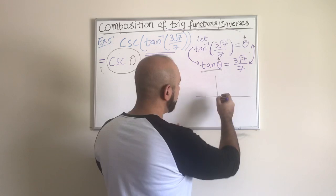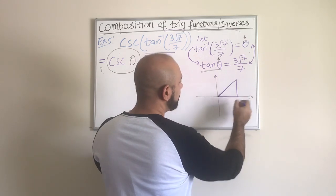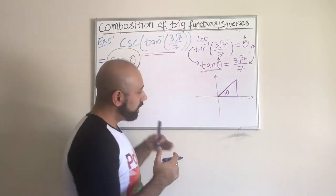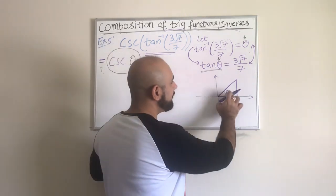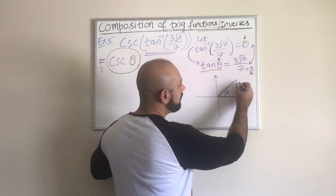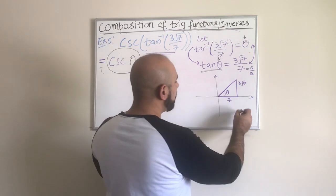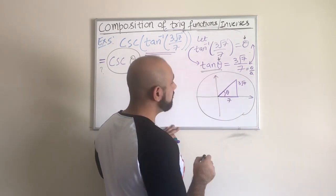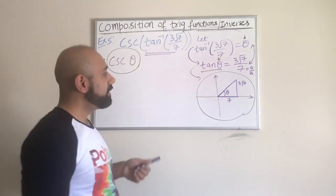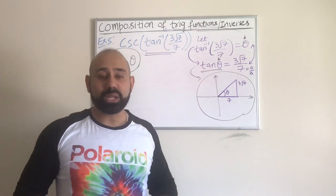I'm going to start drawing that reference triangle. Keep in mind, reference triangle is always drawn with respect to the x-axis, not with respect to the y-axis. This is my angle theta. I know tangent is opposite over adjacent, so obviously my opposite would be 3√7 and my adjacent is going to be 7. Just focus on this right triangle here.